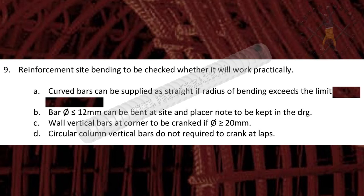Wall vertical bars at corner to be cranked if dia is greater than or equal to 20 mm. Circular column vertical bars do not require cranking at laps.